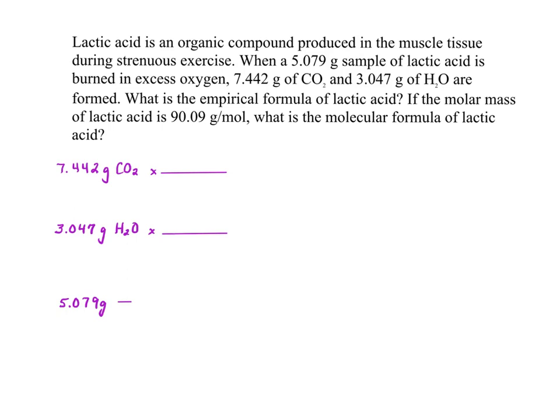So we have lactic acid. It's an organic compound produced in the muscle tissue during strenuous exercise. When this is the total mass of my lactic acid is burned, this is the amount of CO2 I make, and this is the amount of H2O I make. And the first thing we're going to try to find is the empirical formula. After, we'll go ahead and find the molecular formula also. So I'm going to write out 7.442 grams of CO2. I'm going to change grams of CO2 to grams of carbon.